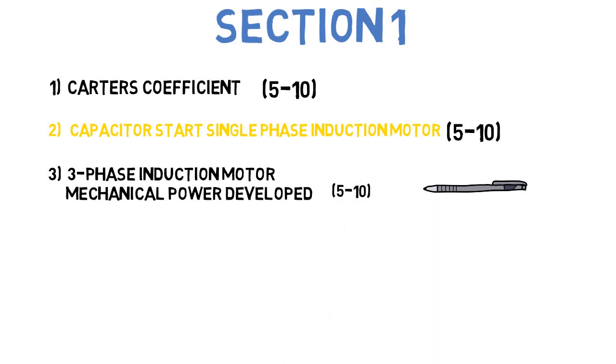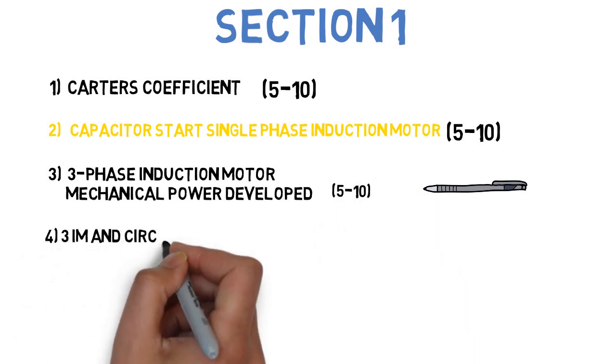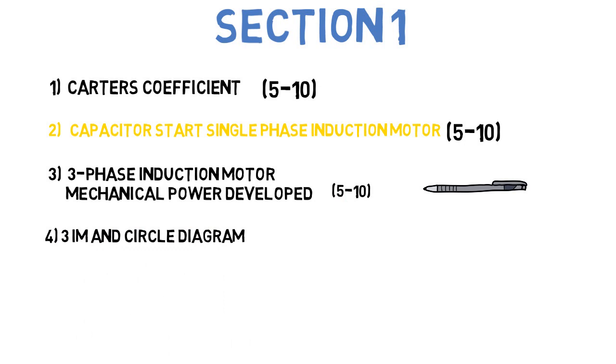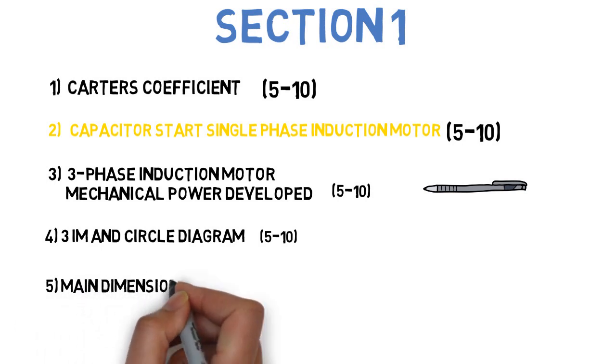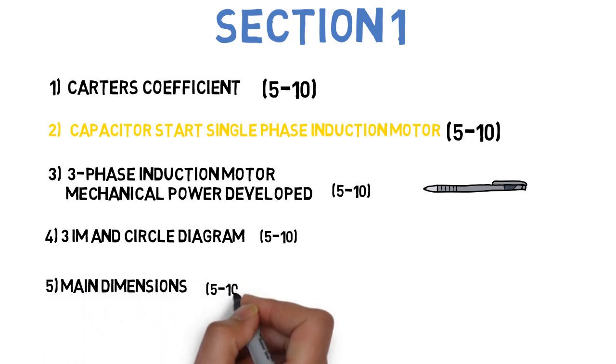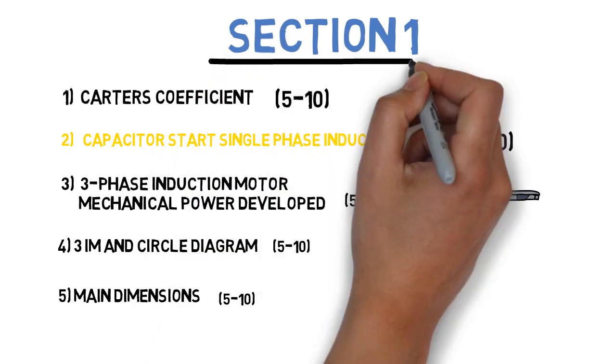Next question is write the numerical for applications of three phase IM and circle diagram. This can come for 5-10 marks. Next question is write the numerical for main dimensions. This can come for 5-10 marks. So these five questions you have to do in section one.